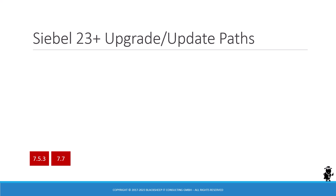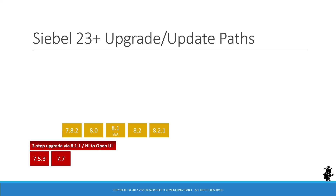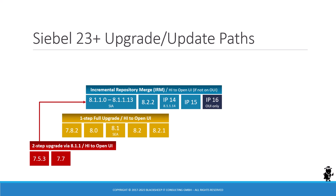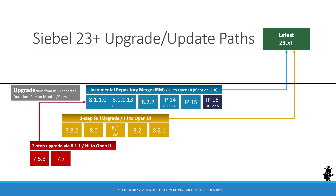If you have version 7.5 or 7.7 — that's really old, 20 years and older — you're in for a two-step upgrade according to the upgrade guide in Bookshelf. If you are on 7.8 to 8.2, you still have to do a one-step full upgrade, and for both you're still on high-end activity on Internet Explorer — unbelievable. You have to go to OpenUI as well. The two-step upgrade takes you to 8.1.1, and if you have that or any other version up to IP16, you're in for what's known as an incremental repository merge, or IRM. So all of these are upgrades to get to the latest version.